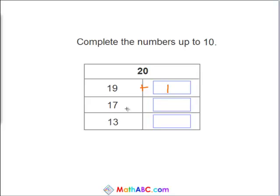What about 17? 17 plus 3 equals 20. 20 and the 13. 13 plus 7 equals 20.